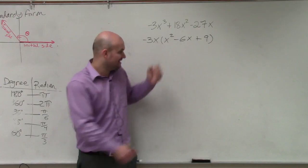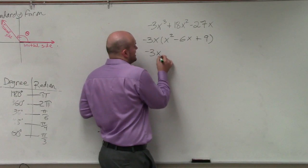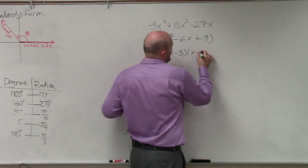And we know that would be x minus 3. So we have negative 3x, then x minus 3 times x minus 3.